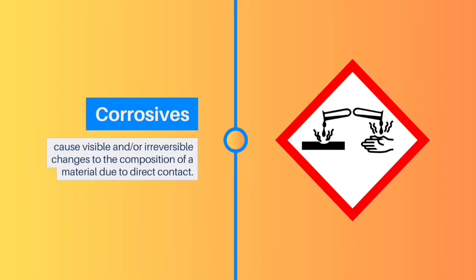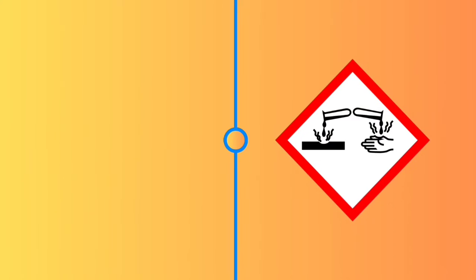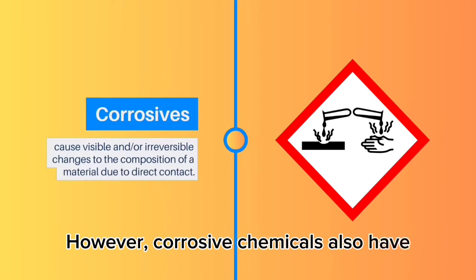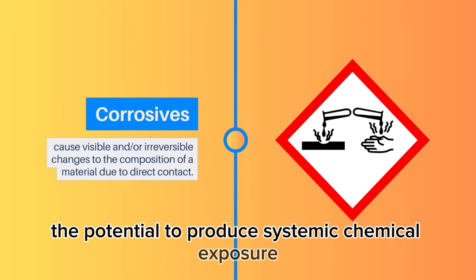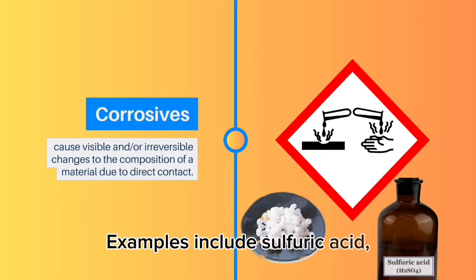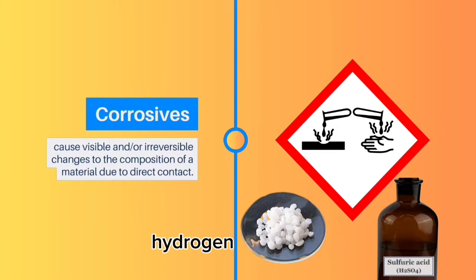Corrosives: Chemical corrosives cause visible and/or irreversible changes to the composition of a material due to direct contact. Similarly, these can also cause a localized reaction in the human body at the point of contact. However, corrosive chemicals also have the potential to produce systemic chemical exposure away from the point of contact when mixed with other substances. Examples include sulfuric acid, sodium hydroxide, and hydrogen peroxide.